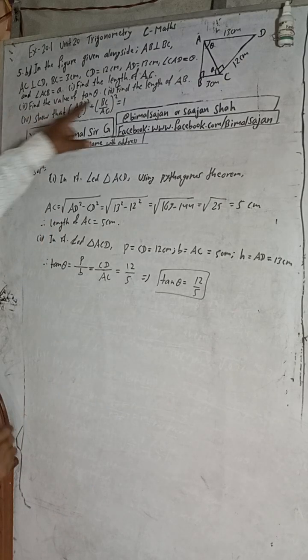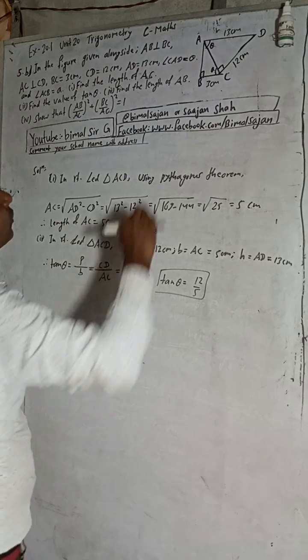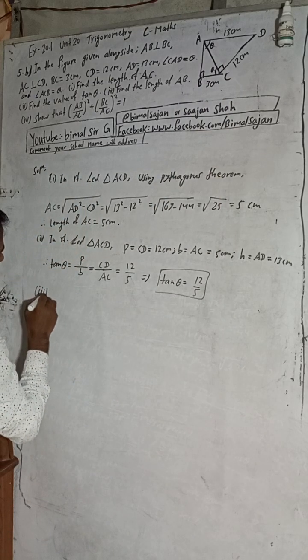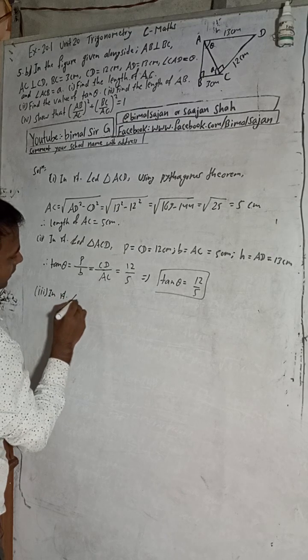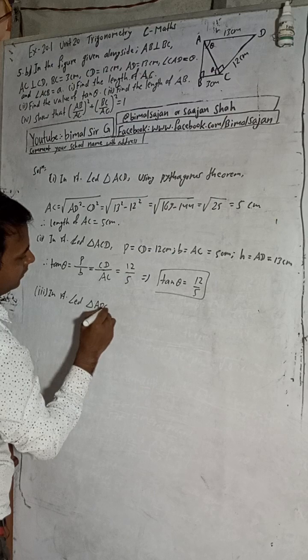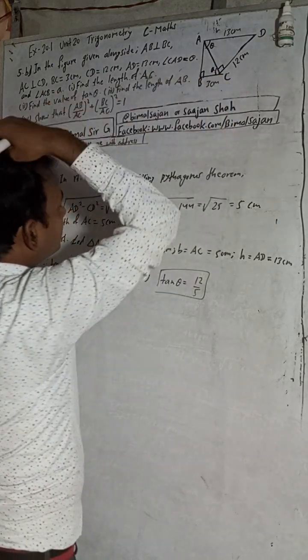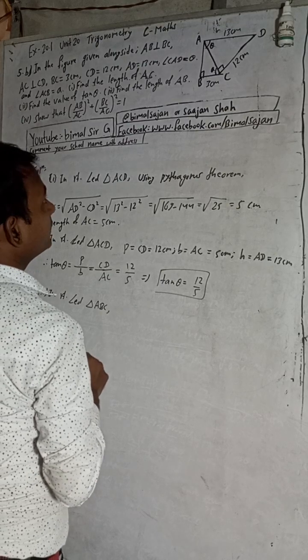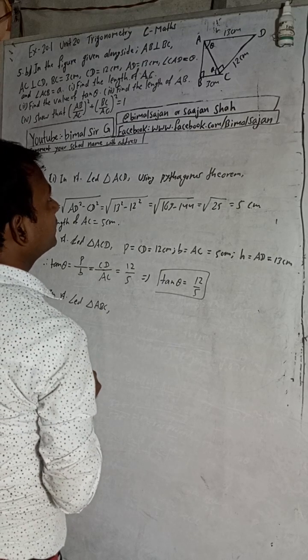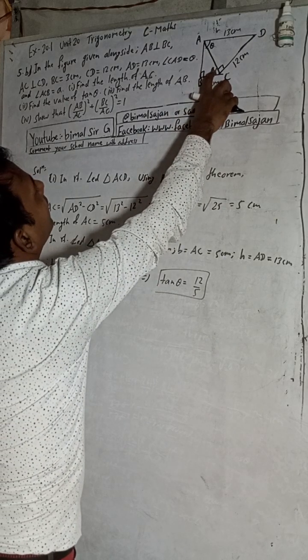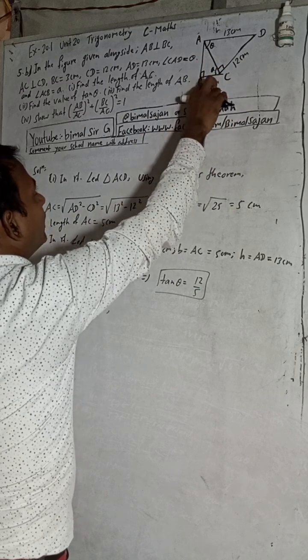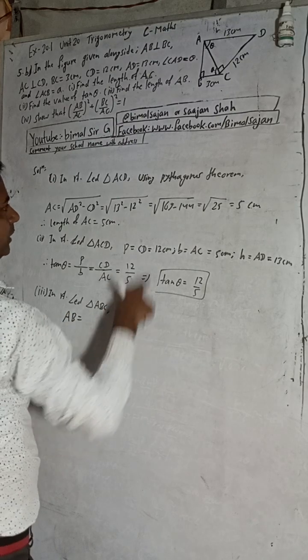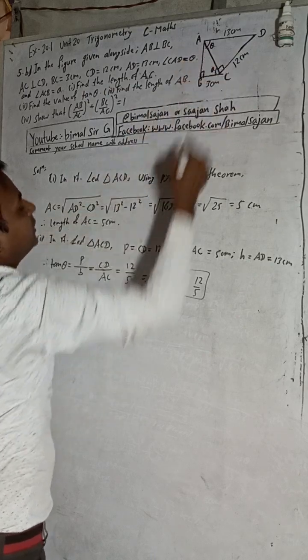Now part 3: find the length of AB. To find AB length, we have to consider triangle ABC. In right angle triangle ABC, we have to find AB. Using Pythagoras theorem, AB is equal to hypotenuse AC square minus BC square.